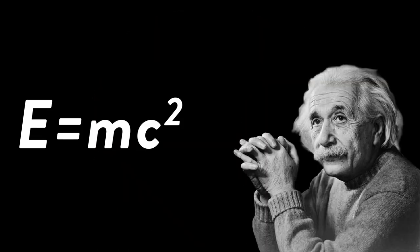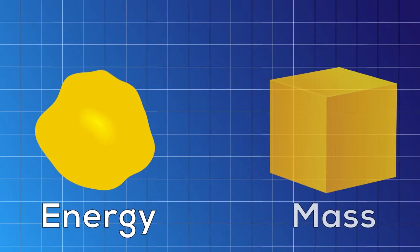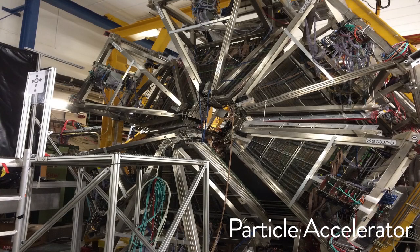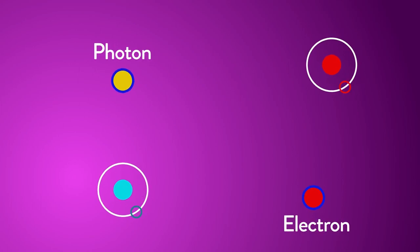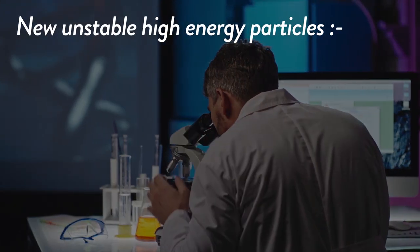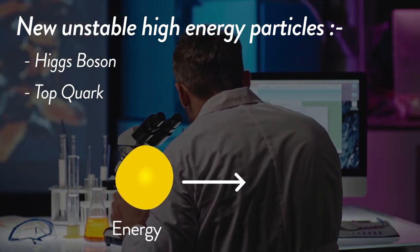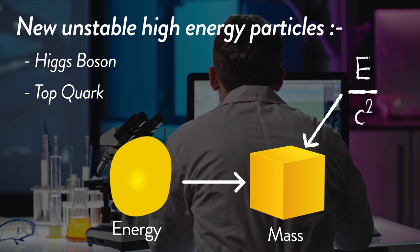Surprisingly, Einstein never actually mentioned E is equal to mc² in his research. Instead, he emphasized creating mass from energy and gave the relation m is equal to E divided by c². This energy-to-mass concept is used in particle accelerators, where we smash a photon and an electron with very high energy to generate a photon, an electron, and a pair of matter and antimatter particles. That's how scientists search for new unstable high-energy particles like the Higgs boson or the top quark, by converting pure energy into mass. The mass obtained can be calculated by dividing the energy by c².